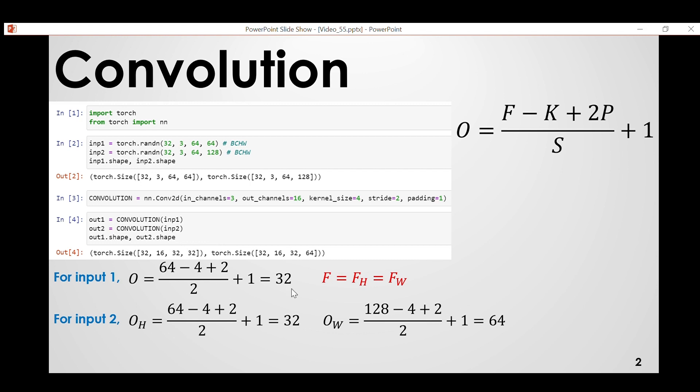Then I provided both these two inputs to our convolutional layer and the output shape looks like this. So let's use this formula. For input 1, F is 64, kernel size 4, padding 1. So 2 multiplied by 1 is equal to 2, stride 2. If you calculate then we get 32. In this case the input size for height and width is same, 64 and 64.